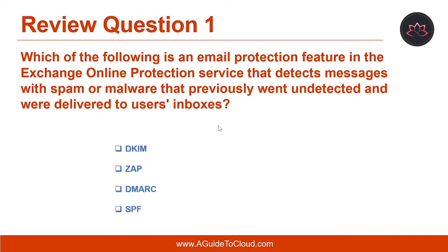Let's look at the first question. Which of the following is an email protection feature in the Exchange Online Protection Service that detects messages with spam or malware that previously went undetected and were delivered to users' inboxes? The correct answer is ZAP.